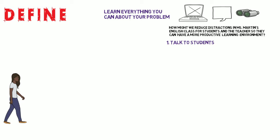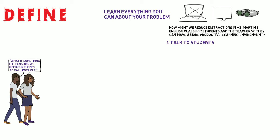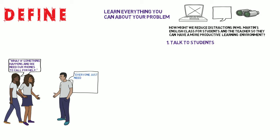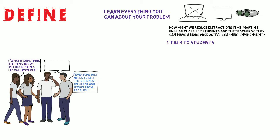One student said that they need their phones for security purposes, not just social reasons: "What if something happens and we need our phones to call for help?" Another student said, "Everyone just needs to keep their phones on silent and it won't be a problem." They also shared how they are able to use their phones for classwork, like research. "I'm just used to having my phone out."